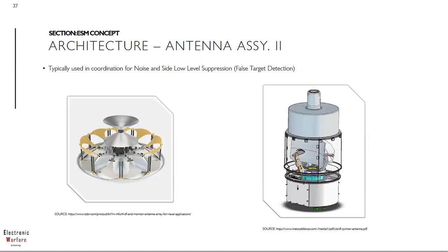Here are two examples of omni and directive antenna integration. On the left side, we have nine directive horns covering 360 degrees and one bicone omni on top, as you can clearly see. On the right side, a more complex assembly: from top to bottom, two omnis — one for higher and one for lower frequency — then a spinning antenna with two main reflectors, again one for higher and one for lower frequency. Remember, the higher the frequency, the smaller the antenna. On the bottom, we have the control for the spinning: a rotary joint with a motor shaft.